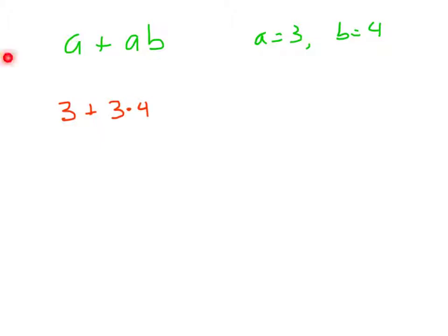So, A is 3. So, 3 plus 3 times 4. So, order of operations says I do the 3 times 4 first. That'll be 12. 3 is the same. And now I can do 3 plus 12 equals 15. And that will be our final answer there.